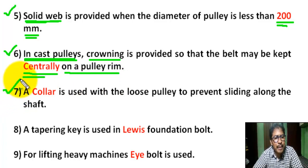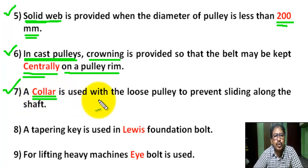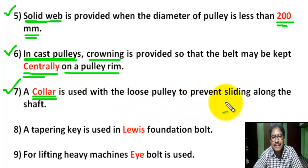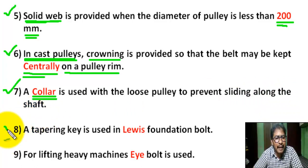Question 7: A collar is used with the loose pulley to prevent sliding along the shaft.